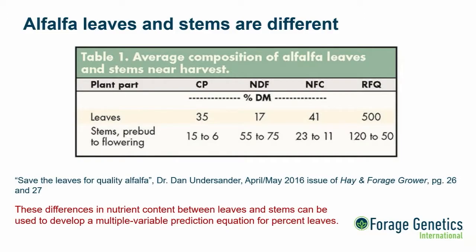Dr. Undersander has explored the differences between leaves and stems in quite detail and published results from that. We'll also show some data from our lab. The difference between crude protein in leaves and stems is quite large — much higher for leaves than stems. Conversely, stems are much higher in NDF than leaves. The same effect holds for non-fibered carbohydrates, and that's what really drives the big difference in relative forage quality. When I see differences this big, it tells me there's an opportunity to use these differences in nutrient profiles to develop prediction equations.